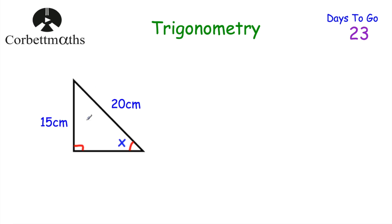Let's look at the first question. We've got a right-angled triangle where the height is 15 centimetres and the diagonal is 20 centimetres, and we've been asked to find the size of angle X. The first thing to do is label the sides. The side opposite the right angle is the hypotenuse. The side opposite angle X is the opposite, and the remaining side is the adjacent.